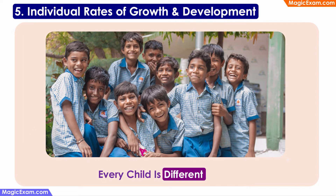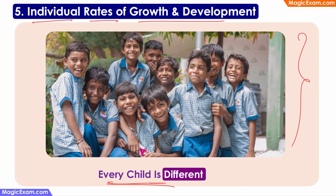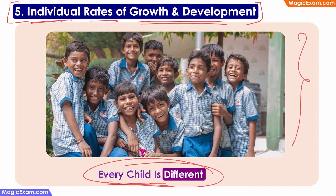The next principle is individual rates of growth and development. In a typical classroom, every child is different. The physical growth of every child will be different — some children may grow fast, some will take time. Similarly, some children may learn language much faster than others, and some children may develop cognitive ability much earlier than others. Therefore, the growth and development of every child will be different. Restating this principle: every child is different.